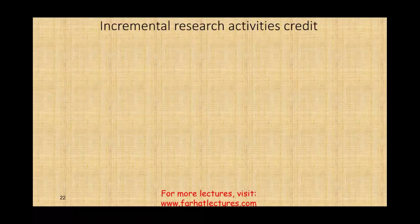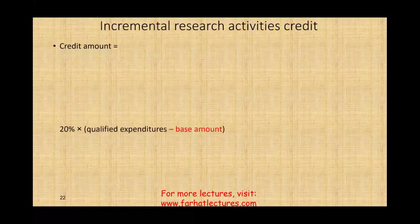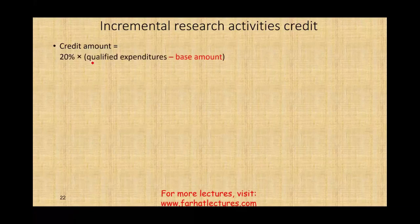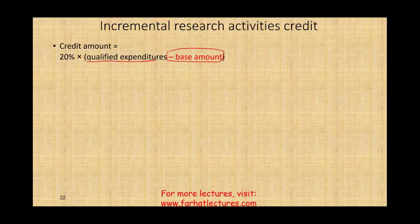How much do you get in a credit for the incremental research activities? The credit amount is equal to 20% times qualified expenditure minus a base amount. This base amount will appear a couple of times. What is the base amount? It's an amount that's going to be given to you — the company will tell you what that amount is. For the purpose of the CPA exam and your studies, this amount will be provided to you.